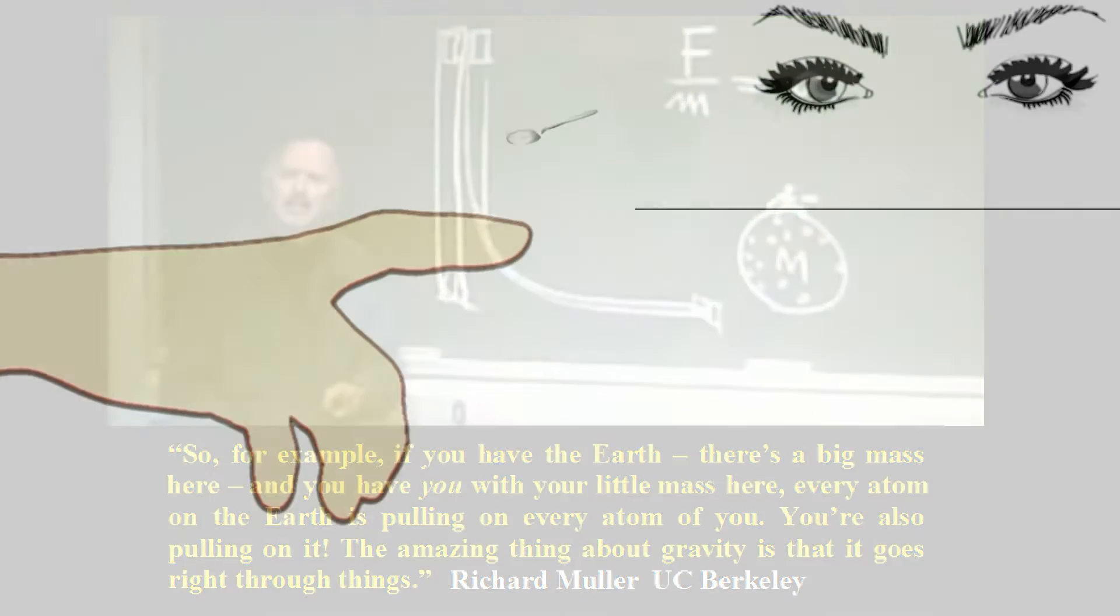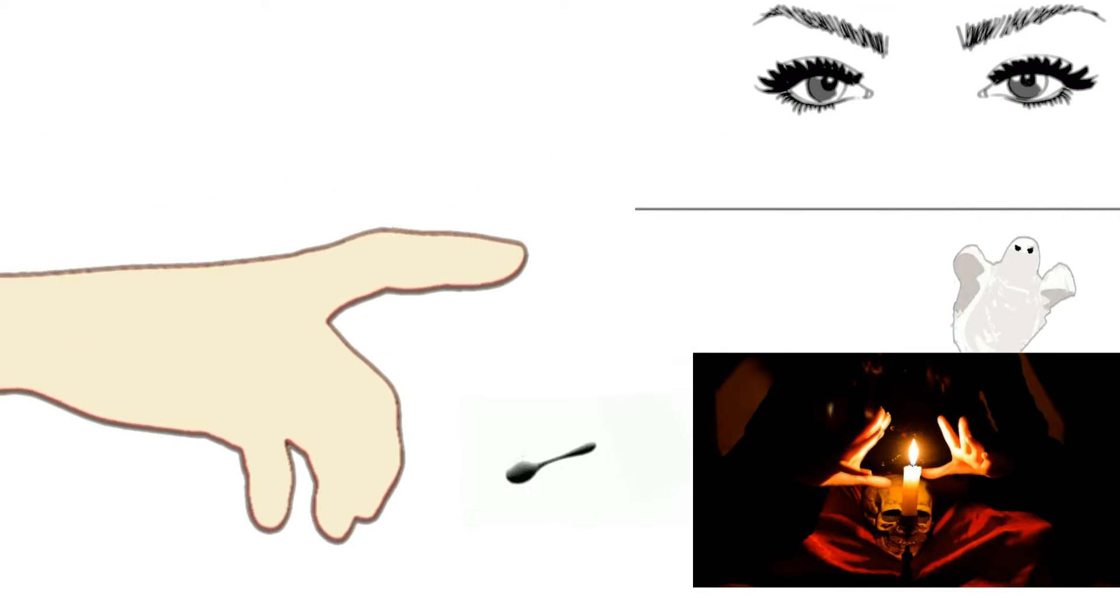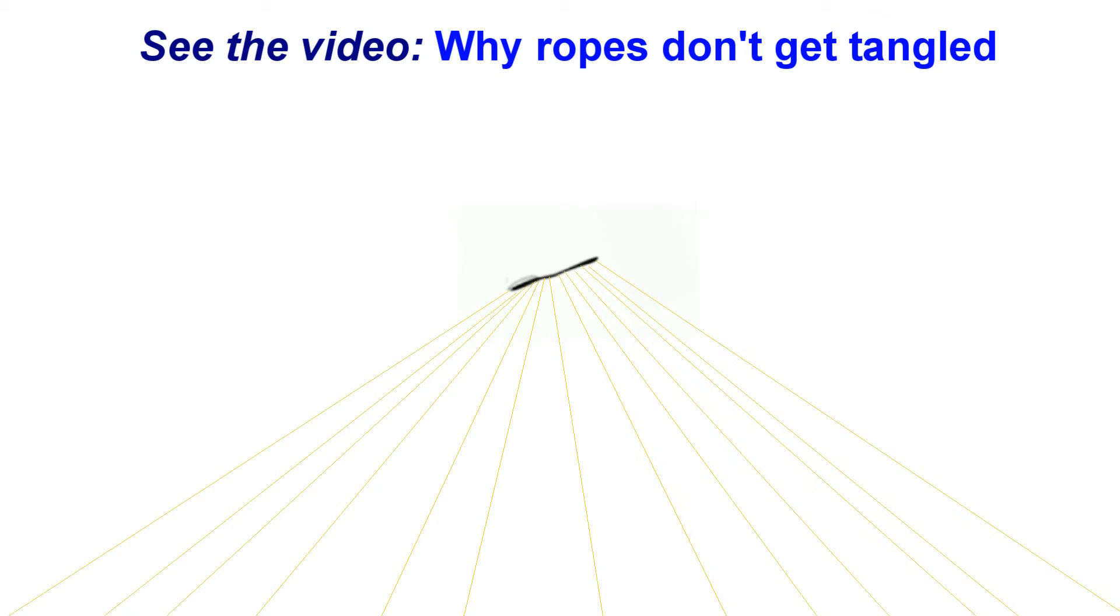Gravity is seemingly supernatural simply because we cannot see or touch the secret agents Mother Nature uses to do this trick. Yet, if we conclude that no physical object came in contact with the skin of the spoon, we are in effect simulating gravity with spirits and explaining the occurrence with black magic. Under the rope hypothesis, gravity is not an action at a distance phenomenon. It is merely that we cannot see or touch the entities that serve as mediators, the electromagnetic ropes.